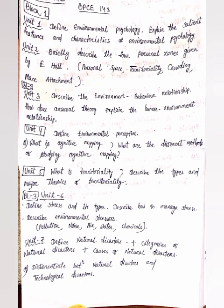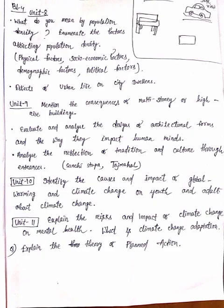Also in Unit 6: describe environmental stressors like pollution, noise, air, water, and chemicals. In Unit 7: differentiate between natural disasters and technological disasters, and explain the definition, categories, and causes of natural disasters. In Block 4, Unit 8: what do you mean by population density?